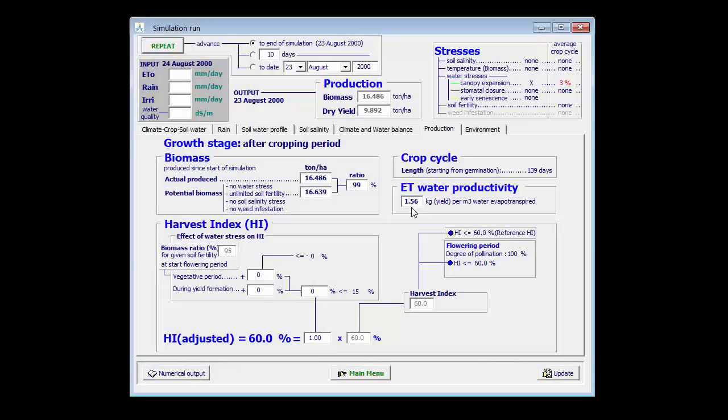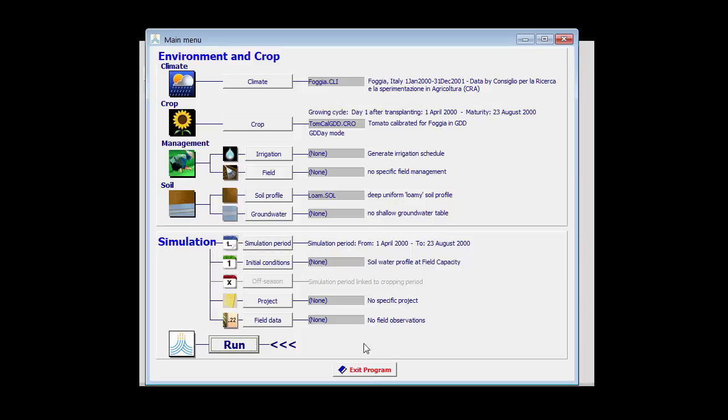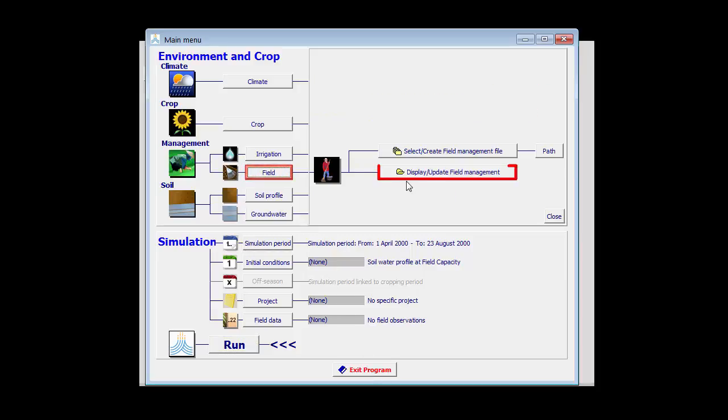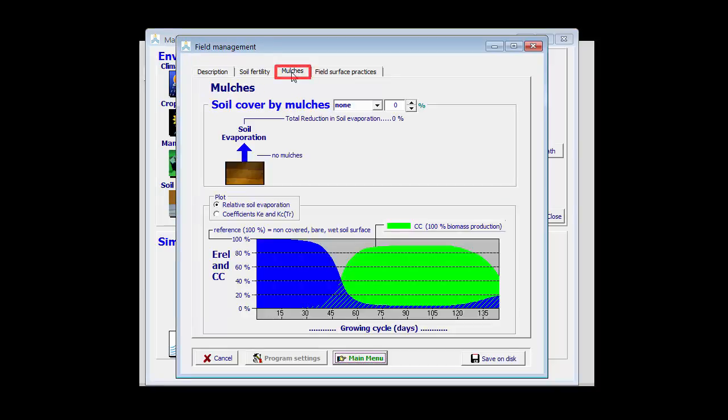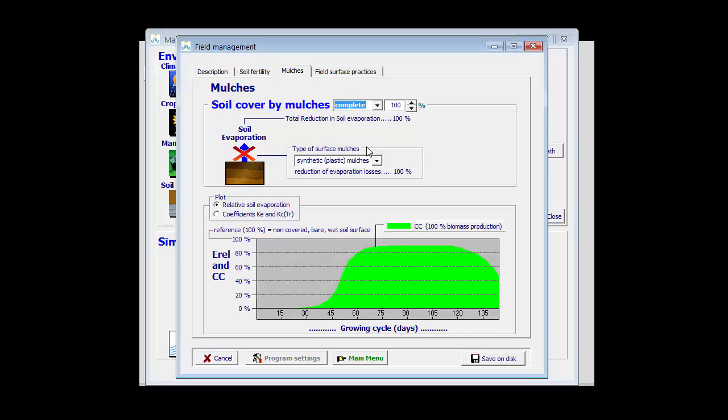Let's now see the effect of mulches. Therefore, I return to the main menu, go to field management, and in the tab sheet of mulches, I'm going to consider mulches. I take a complete cover, 100%, and the type of mulches are organic plant material, which gives a reduction of the soil evaporation by 50%.